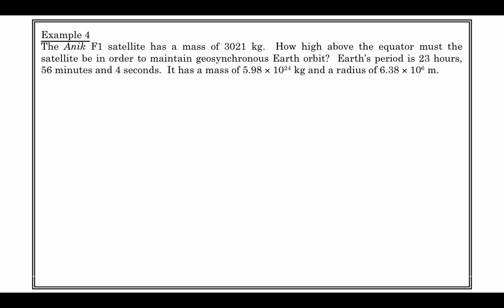Here's an example of one of these satellite questions. A certain satellite has a mass of 3,021 kilograms. How high above the equator must be maintained in order for this thing to stay in geosynchronous Earth orbit? I'm going to give you the period of Earth, which also, because it's geosynchronous, is the period of the satellite: 23 hours, 56 minutes, and 4 seconds. Earth has a mass of 5.98 × 10²⁴, and it has a radius of 6.38 × 10⁶.